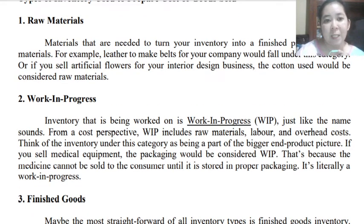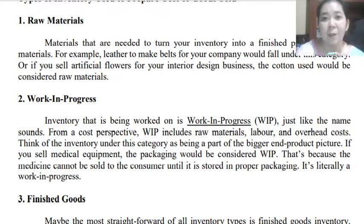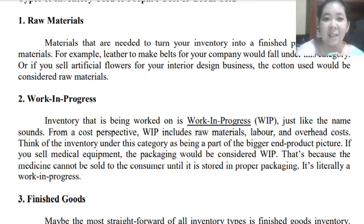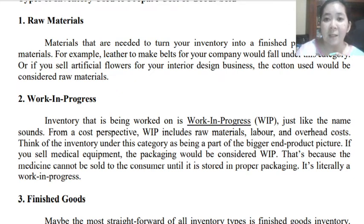Work in process is an inventory that is being worked on — meaning these are raw materials that were already started, or the entity has started working on them, but they were not yet finished at the end of the accounting period. Just like its name, work in progress or work in process, these are still unfinished items. From a cost perspective, your work in process includes raw materials, labor, and overhead costs.